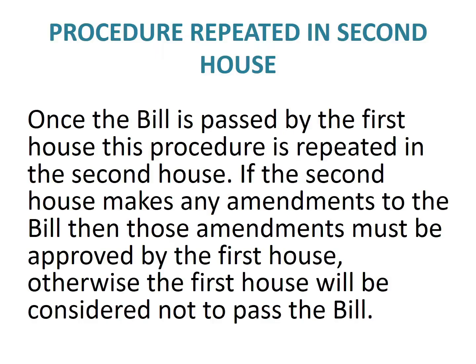If the bill is passed by the first house in the third reading, then this whole procedure is repeated in the second house. The bill must pass through a first reading, a second reading with a second reading speech and debate, the committee stage, and a third reading. Bills are generally first passed by the lower house and then sent to the upper house. Since one person cannot be a member of both houses, the role of the responsible minister in the lower house will be undertaken in the upper house by another member of the government — generally a minister elected to the upper house.